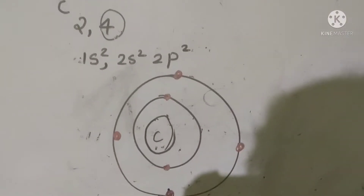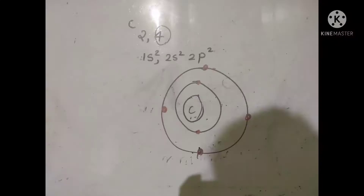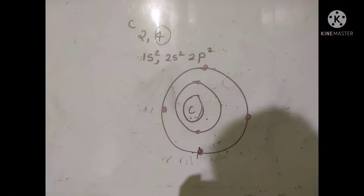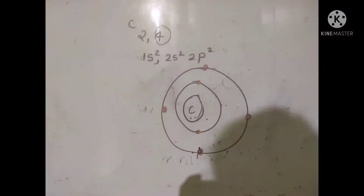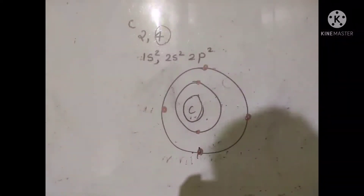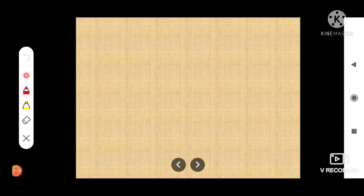What is valency? Valency is the combining capacity of an atom of an element. In the case of carbon, its outermost shell contains 4 electrons, so it needs 4 more electrons to complete the octet — the valency is 4. Carbon gets those 4 more electrons by gaining or sharing with other atoms to attain noble gas configuration.